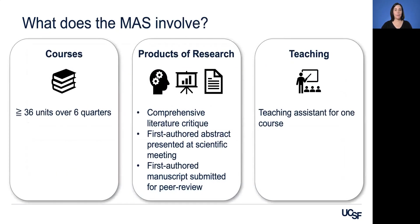What does the MAS involve? The MAS includes 36 units of coursework over six quarters. We have shortened the typical seven quarters of the MAS program for medical students because the curriculums are complementary. MAS courses are in foundational topics like epidemiologic methods and biostatistics.